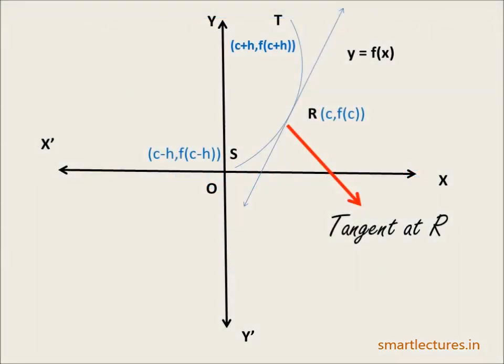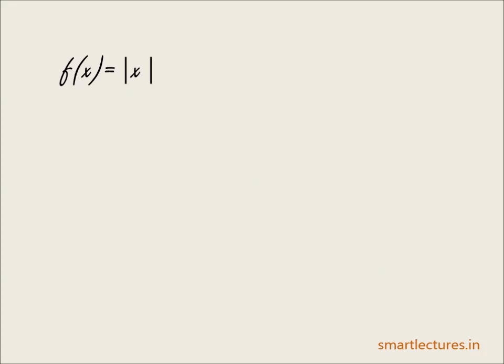In the last episode, you learned that a function f(x) is differentiable at a given point r if and only if there exists a unique tangent at point r. Or in other words, f(x) is differentiable at point r if and only if the curve doesn't have r as a corner point. Now let's understand this with one important example: f(x) = |x|, which is not differentiable at x = 0.